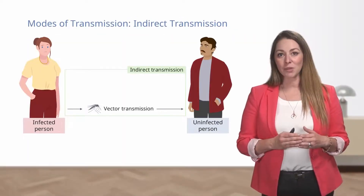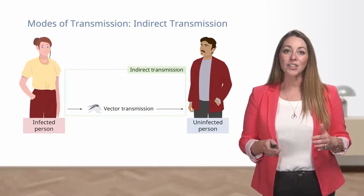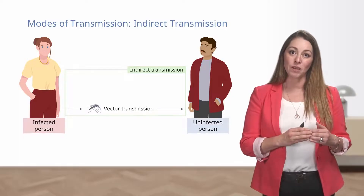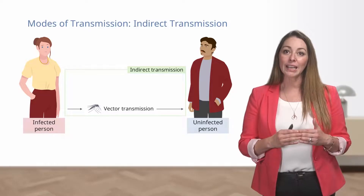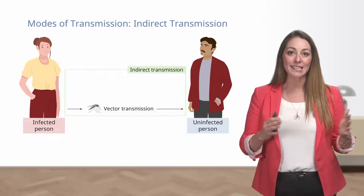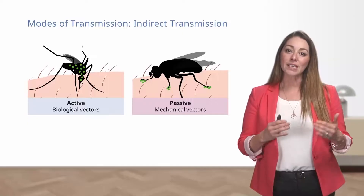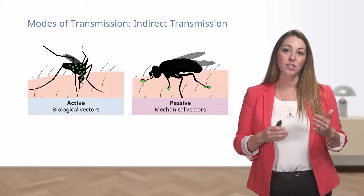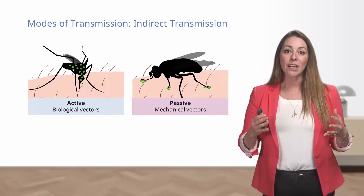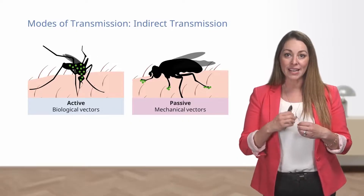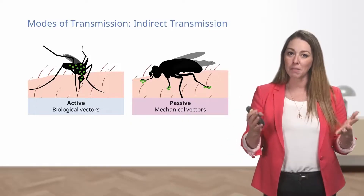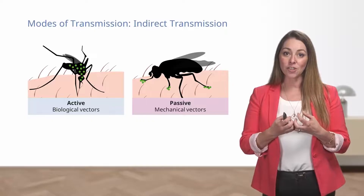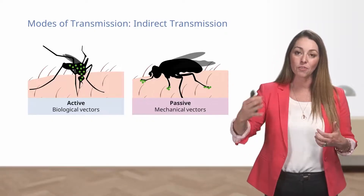Another form of indirect transmission is vector transmission. A vector is a living organism that transmits an infectious agent from one infected animal to a human or another animal. Vectors are frequently arthropods such as mosquitoes, ticks, fleas, and lice. Biological vectors, such as mosquitoes and ticks, may carry pathogens that multiply within their bodies and be delivered to new hosts, usually by biting. Mechanical vectors, such as flies, pick up infectious agents on the outside of their bodies and transmit them through physical contact.